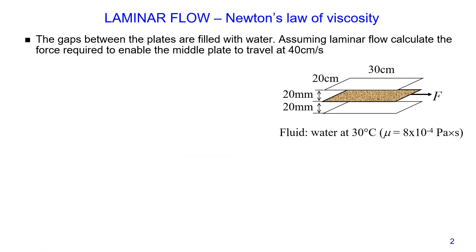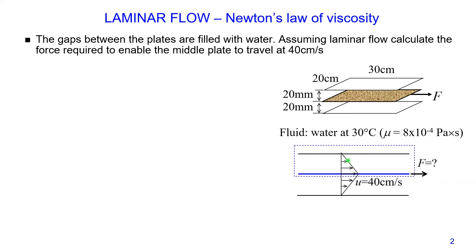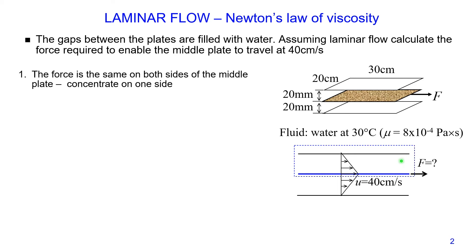In this problem we have three plates. The gaps between the plates are filled with water. Assuming laminar flow, we need to calculate the force required to enable the middle plate to travel at 40 centimeters per second. Since we have laminar flow, the velocity distribution between the middle plate and the upper plate is linear, as well as between the lower plate and the middle plate. Velocity changes from zero on the lower and upper plates to a maximum of 40 cm/s on both sides of the middle plate. The force on both sides of the middle plate is the same because the gap distance is 20 millimeters on each side and the fluid is the same.